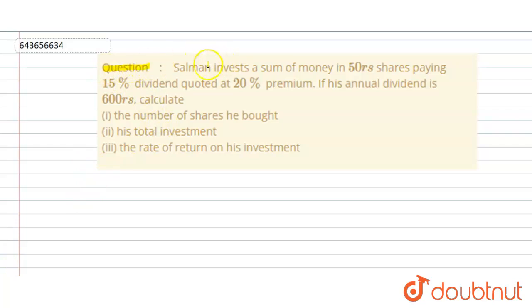Given: Salman invests a sum of money in 50 rupees shares paying 15% dividend, quoted at 20% premium. If his annual dividend is 600 rupees, we need to calculate: first, the number of shares he bought; second, his total investment; and third, the rate of return on his investment.